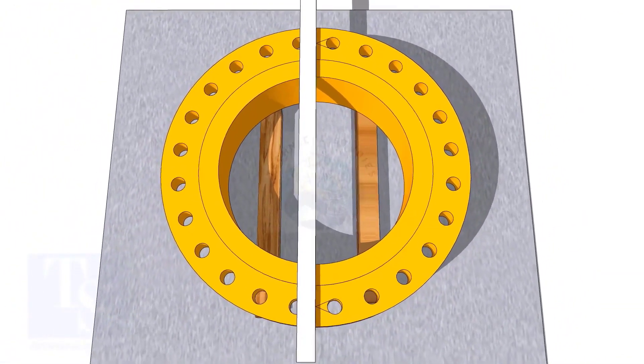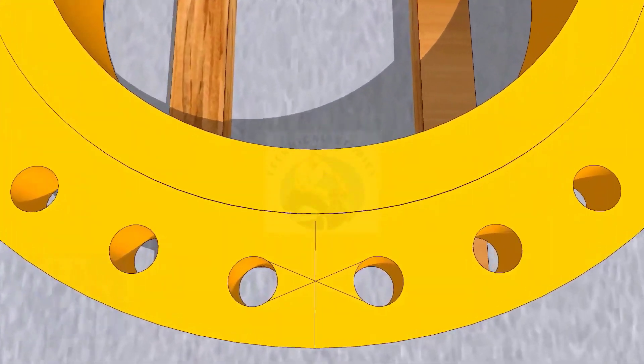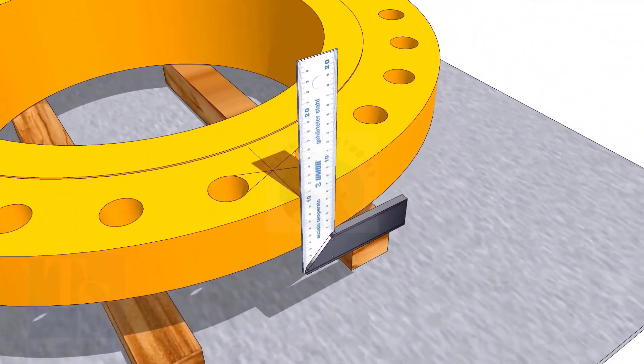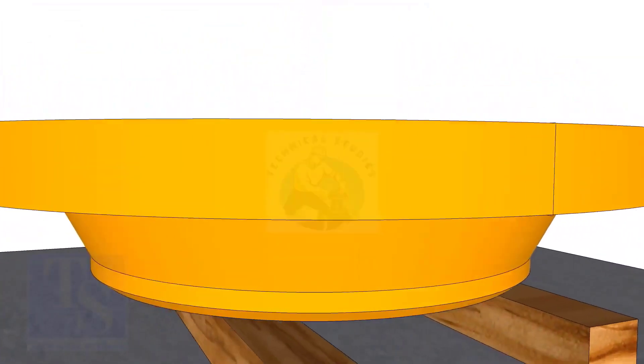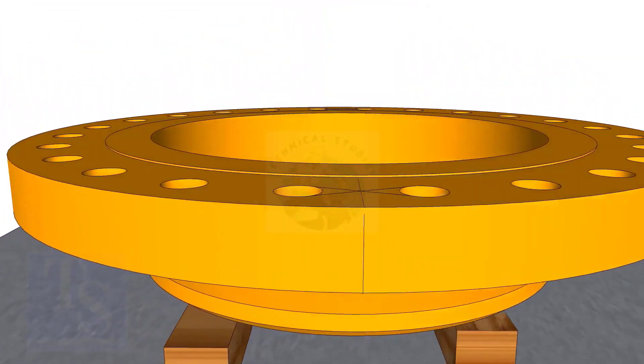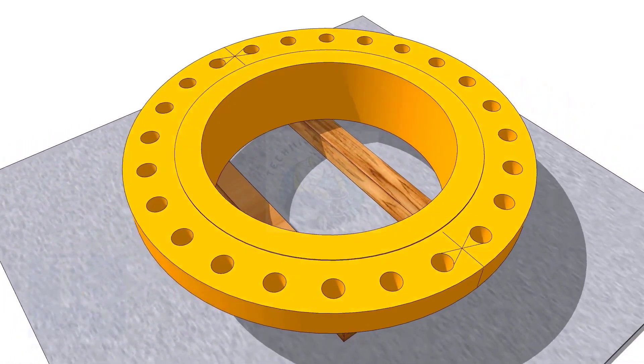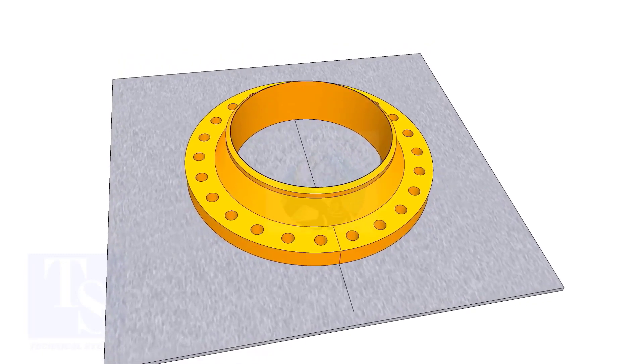Draw the center line of the flange and transfer it to the sides, as shown. Draw a line on a straight plate. Put the flange on the plate, matching the center line of the flange and the line on the plate.